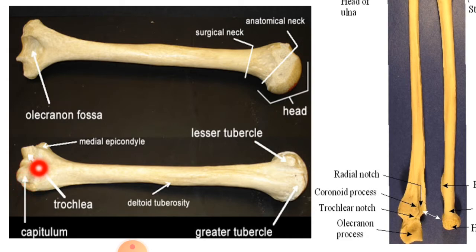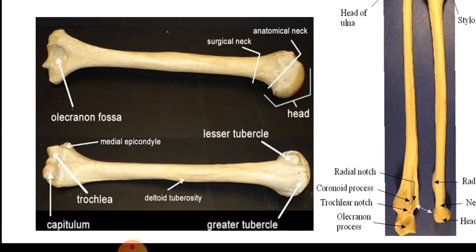So these are the important articular surface landmarks for the formation of the elbow joint.